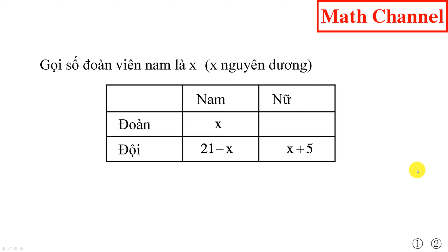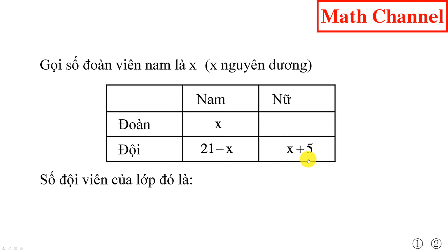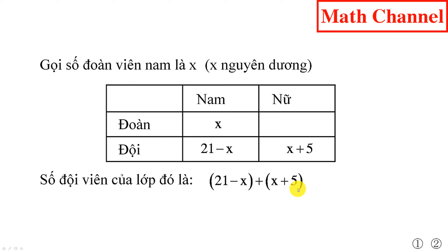Từ đây chúng ta có thể trả lời câu hỏi của bài toán. Số đội viên của lớp đó là: chúng ta lấy số đội viên nam cộng với số đội viên nữ, thì chúng ta tính được tổng số đội viên của lớp đó. Tức là chúng ta có 21 trừ x, cộng với x cộng 5. Bỏ ngoặc và thu gọn, chúng ta được kết quả là 26 học sinh.